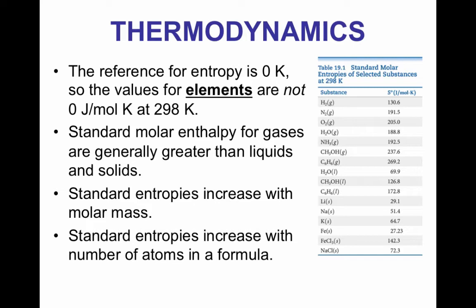When we look at the standard molar enthalpies, it's important to know that in the standard state, it means that it's at 1 atm and 298 kelvin. And when we look at these entropies, they increase with molar mass, and they also increase with the number of atoms in the formula. You don't have to know the why for that. That's beyond the scope of what we're going to work with, but it is important to know that those trends do happen.